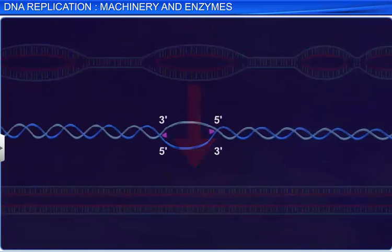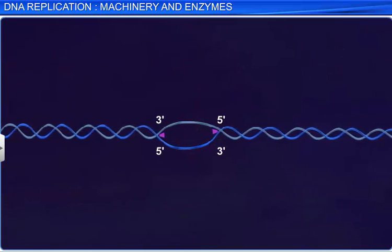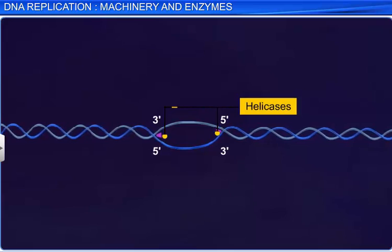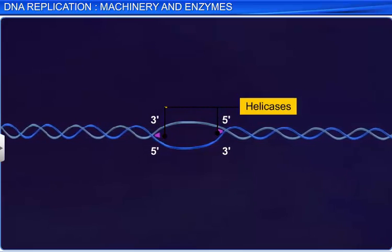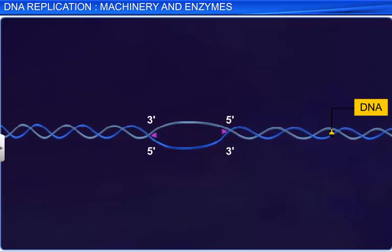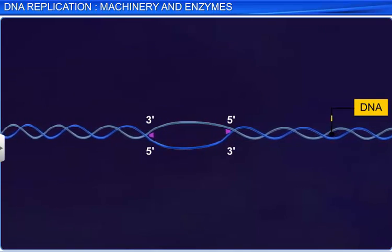During replication, first the enzyme helicases unwind and uncoil the DNA double helix into single strands of DNA by the breakdown of hydrogen bonds.